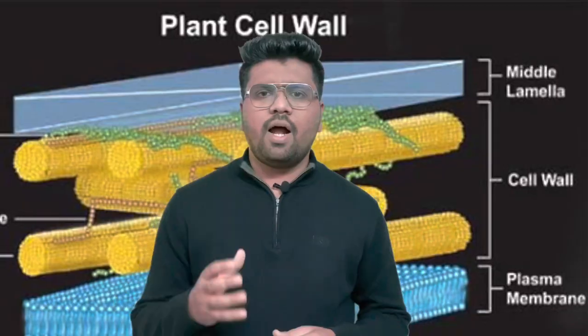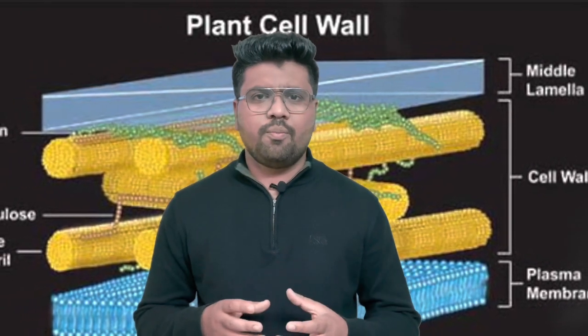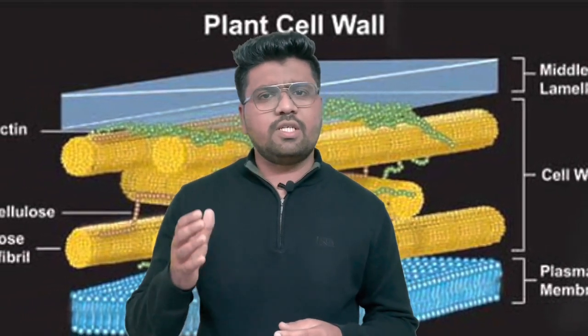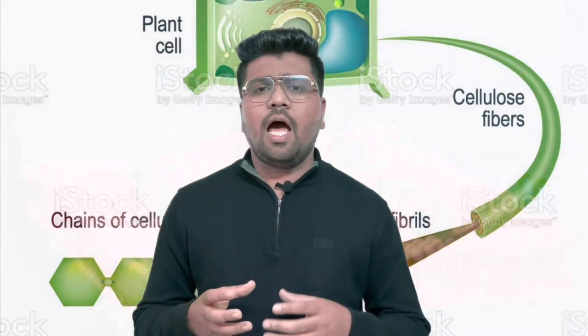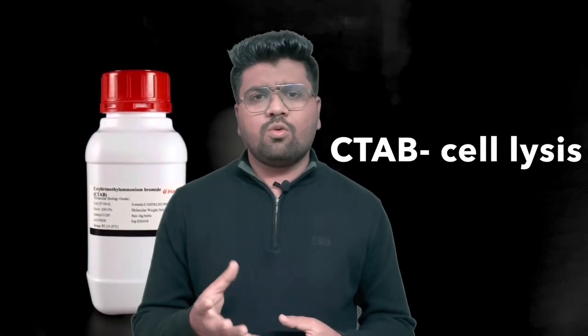Let's start with CTAB. Plant cell is enclosed in a complex cell wall and cellulose is a major constituent. This cellulose dissolves in surfactant or detergent which are amphipathic in nature. Our CTAB is a detergent of amphipathic nature, which means it has a hydrophilic head and hydrophobic tail. By applying mechanical force during tissue grinding along with CTAB, or also using liquid nitrogen, we break down the cell wall and bring out the cellular components.